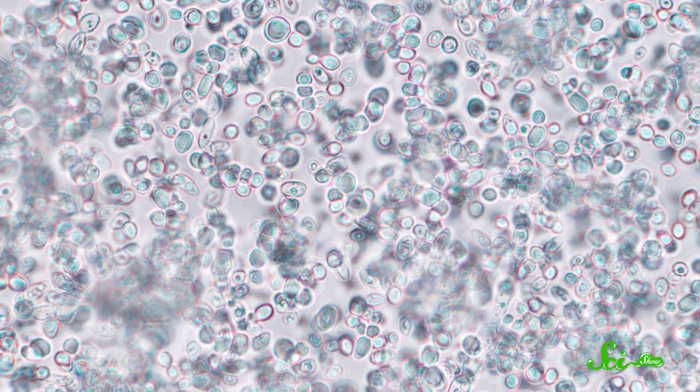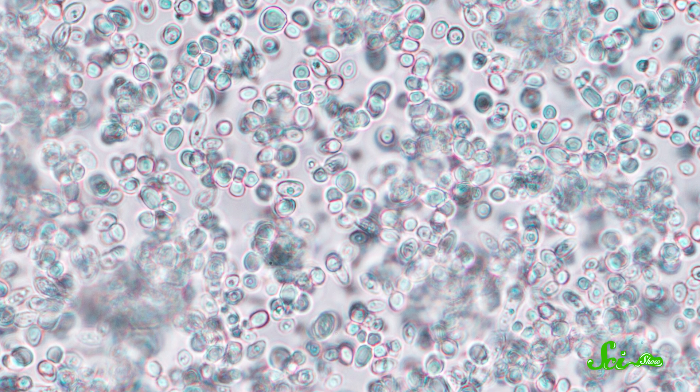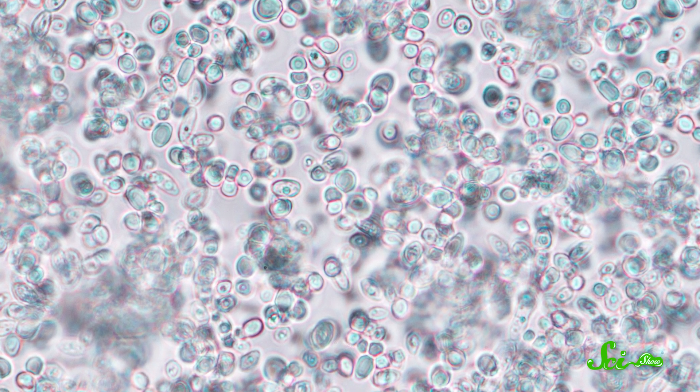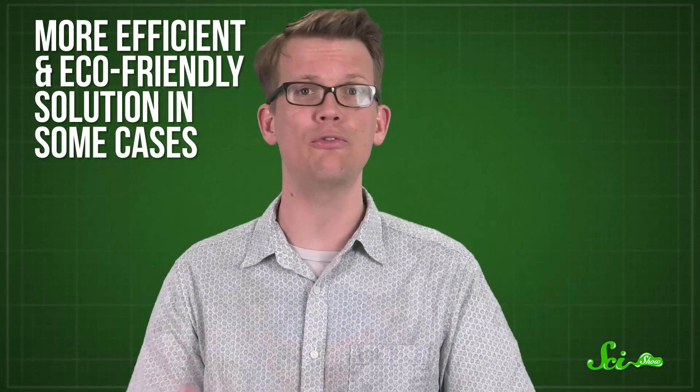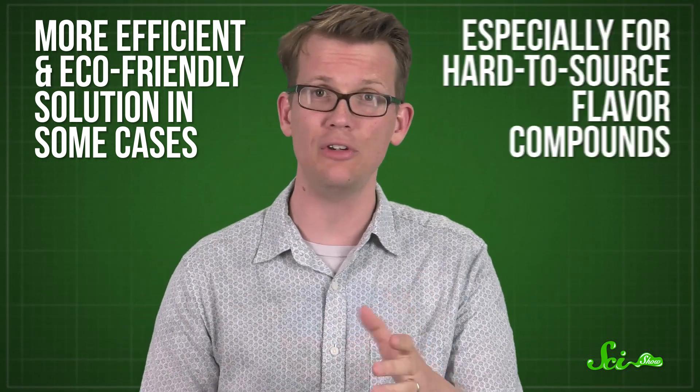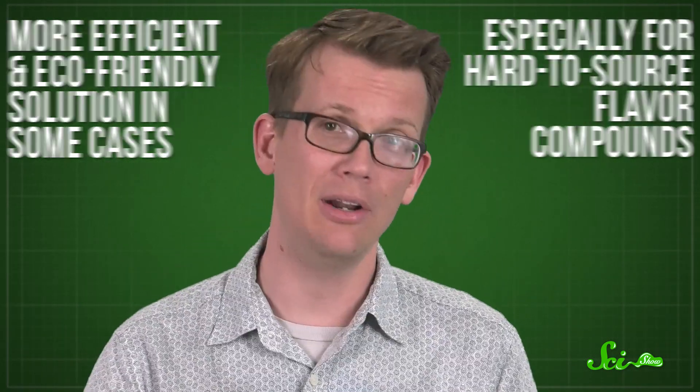With genetic engineering, you can program microbes to produce certain flavor molecules, then isolate the molecules and use them just like other flavorings. That could be a more efficient and eco-friendly solution in some cases, especially for hard-to-source flavor compounds. But in a way, it would make the labeling claims on food packaging even more meaningless. Like, is that all-natural vanilla flavor from vanilla beans or a very special strain of yeast? If you wanted the natural stuff for a more nuanced flavor, you'd have no way of knowing what you were getting.